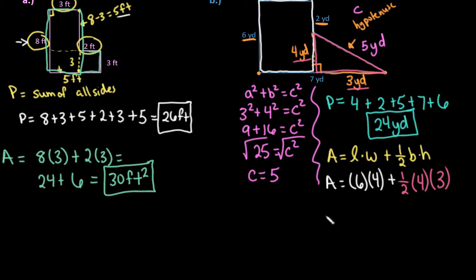And then to simplify this, we would just say that area is equal to 24 plus six, and this ends up being 30 yards squared. So the area of this irregular figure is going to be 30 yards squared.